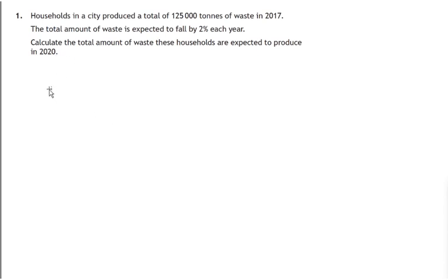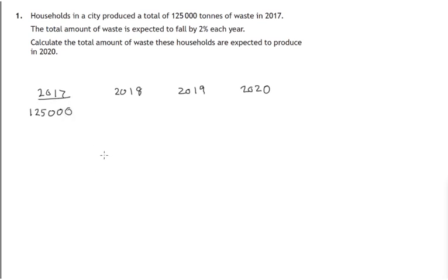So we have a scenario where 2017, 2018, 2019, and 2020 are the years we're interested in, and we know there's 125,000 tons produced in 2017. What's going to happen? That falls by two percent — it goes down two percent. Now the other way of looking at this is that if we start off with a hundred percent, we've ended up with 98 percent.